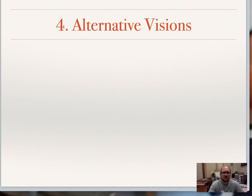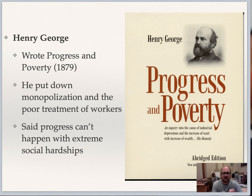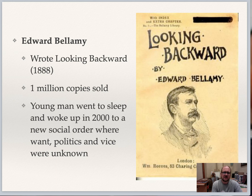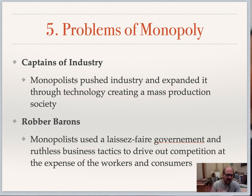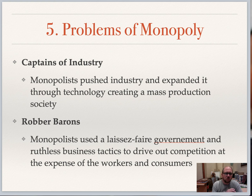There were some different visions of this time period. Henry George wrote about progress and poverty, putting down monopolization and the poor treatment of workers. Edward Bellamy wrote 'Looking Backward,' about a young man who went to sleep and woke up in the year 2000 to a new social order where want, politics, and vice were unknown — basically a criticism of this time period. You can see the problems of monopoly: on one hand, captains of industry allowed America to grow exponentially, enabled mass production, brought costs down so people could afford goods. But robber barons used laissez-faire government and ruthless business tactics to drive out competition and harm workers and consumers.